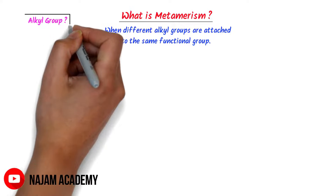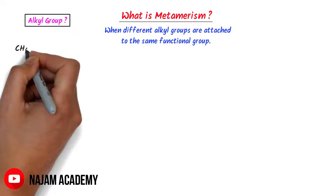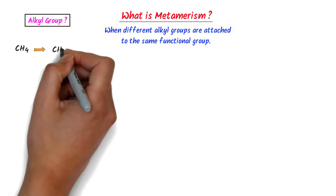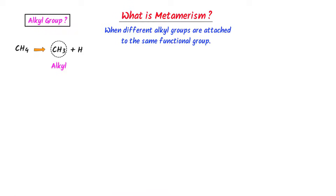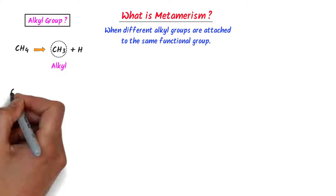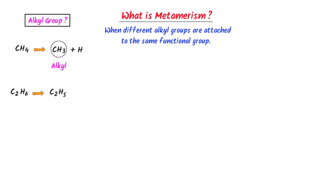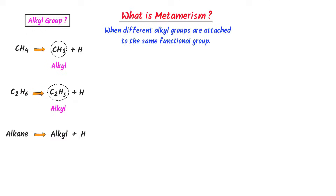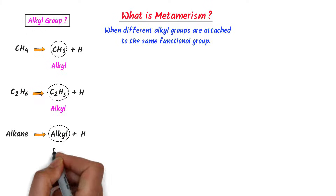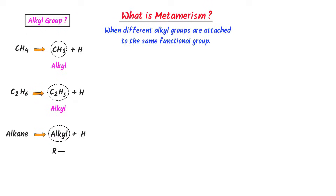Now what is an alkyl group? Consider methane CH4. When methane loses one hydrogen, this CH3 is known as methyl or alkyl. Similarly, when ethane loses one hydrogen, this C2H5 is called ethyl. Remember that when an alkane loses one hydrogen, it is known as alkyl and is represented by R'. Now we know that O is the functional group of the ether.